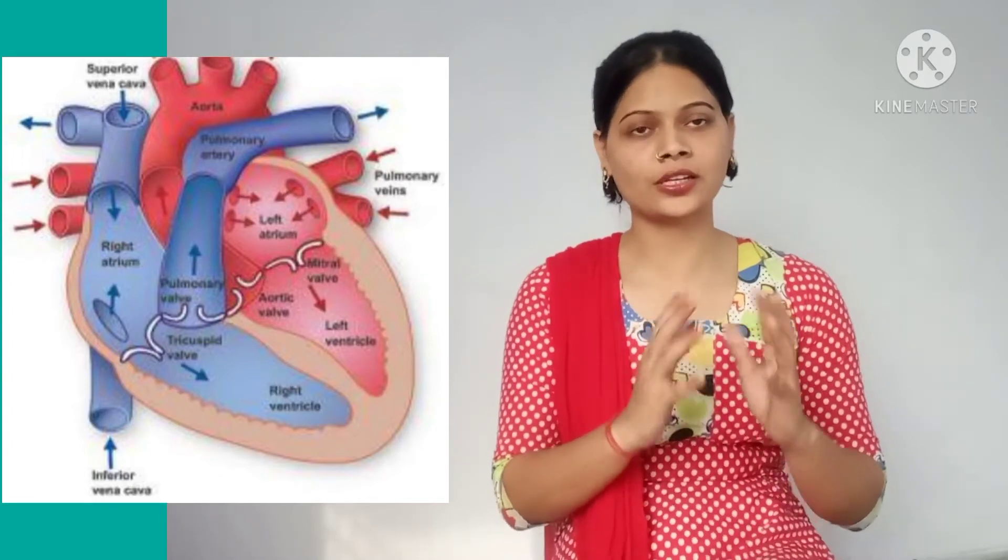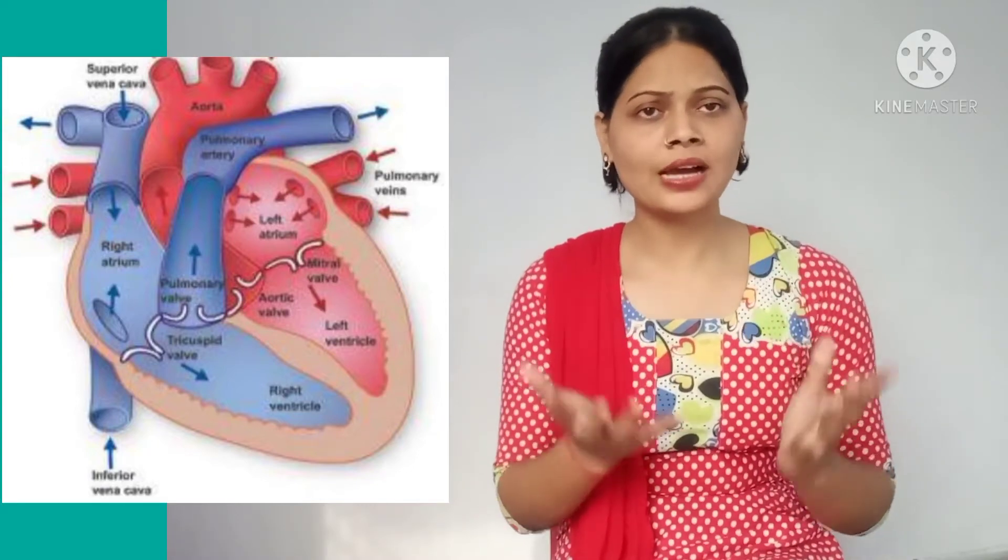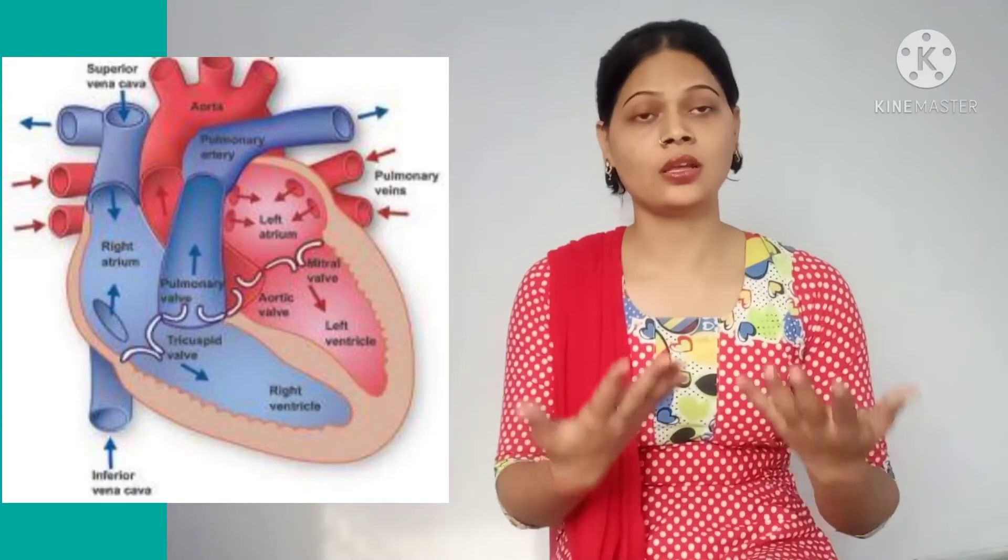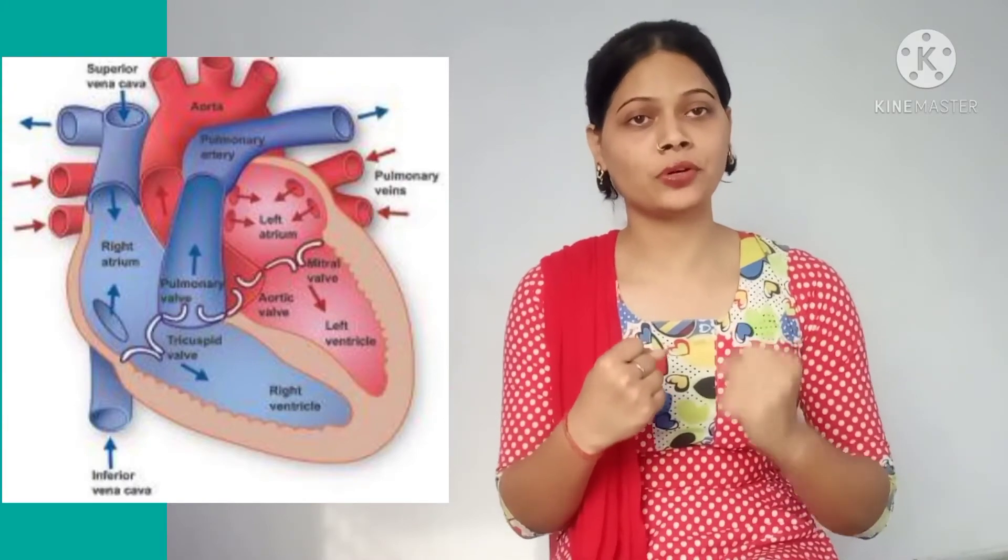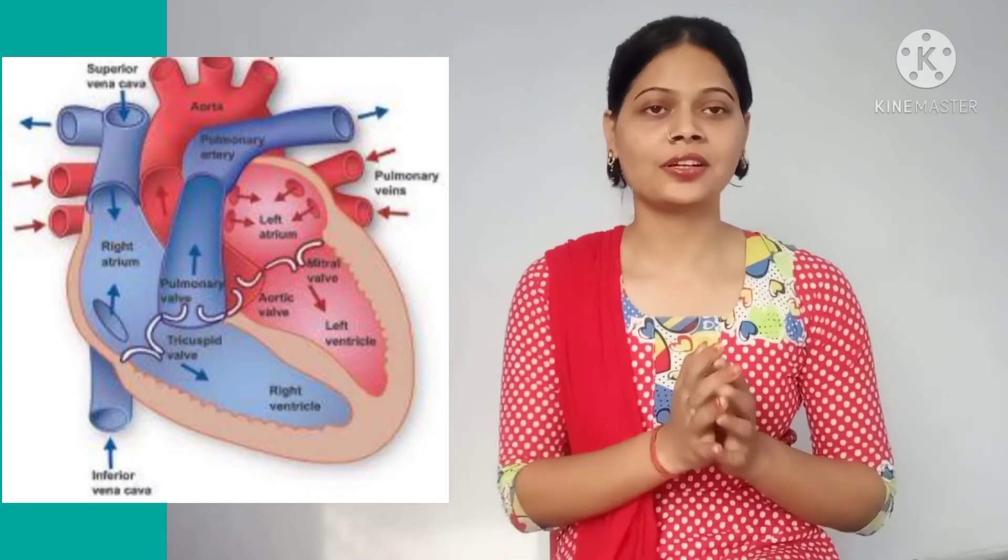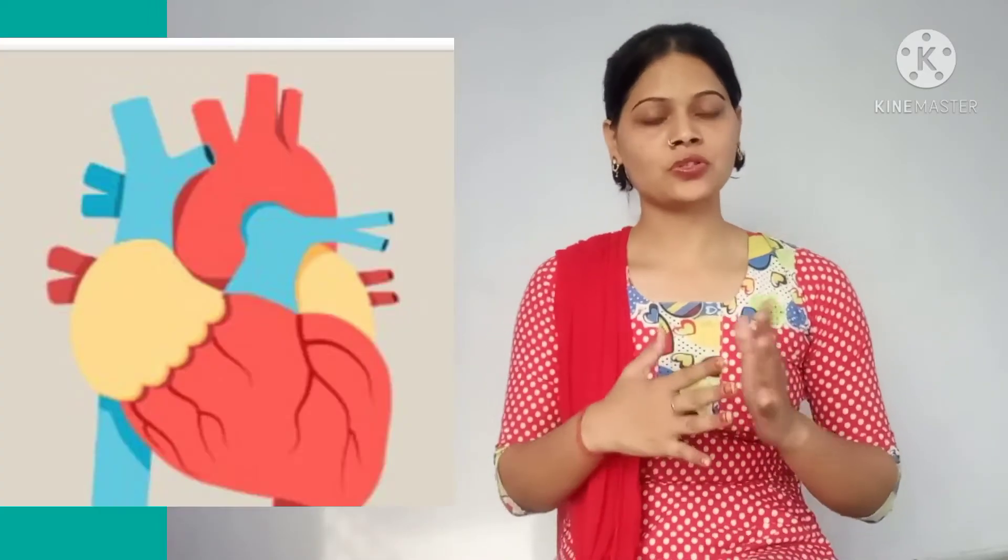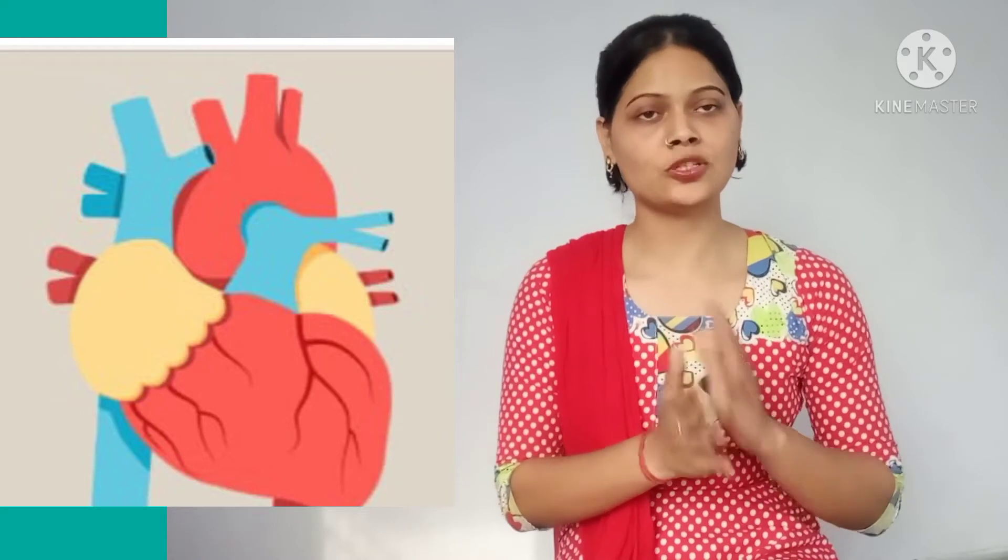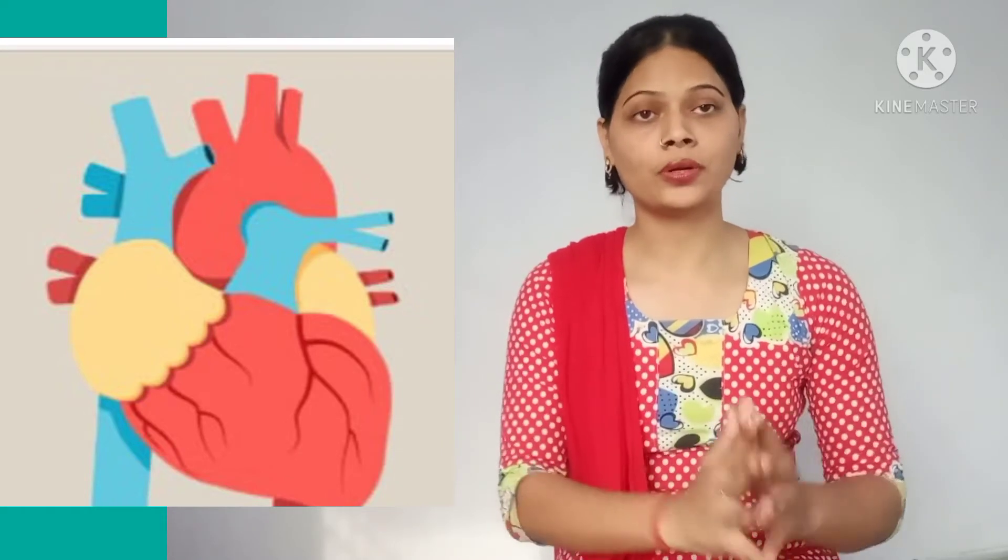Because it is a very delicate organ and muscular, and it is not made up of bone so that it would be stronger and more capable of protecting itself from outer hurdles. But guys, for reducing friction, there is a fluid film between the pericardium and the heart which balances friction and keeps the heart in a protected form.